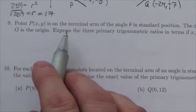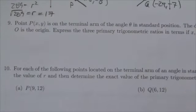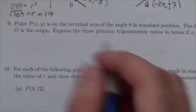It says the point P(x,y) is on the terminal arm of the angle theta in standard position. OP is equal to r. O is the origin. Express the three primary trigonometric ratios in terms of x, y, and r.